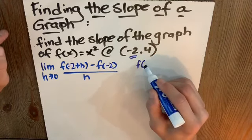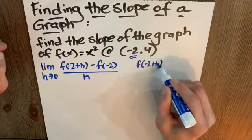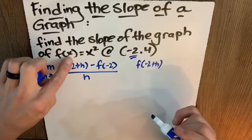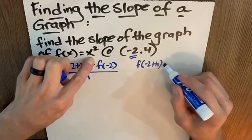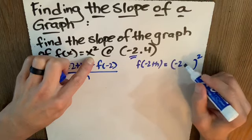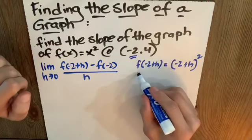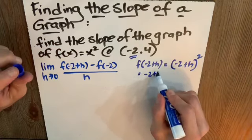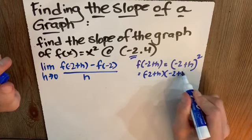What is f of negative 2 plus h? Well, the function says take your input and square it. So whatever our input is, we'll square. That's negative 2 plus h, which we know is negative 2 plus h times negative 2 plus h.